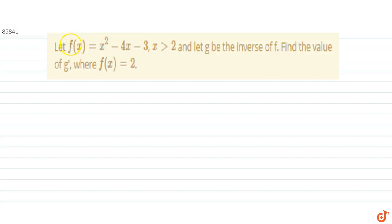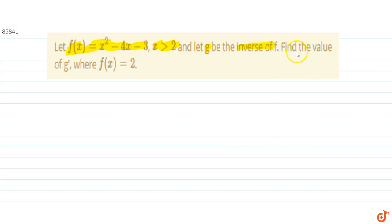In this question we are given: let f of x equals x squared minus 4x minus 3, where x is greater than 2, and let g be the inverse of f. We have to find the value of g'(x) when f of x equals 2.